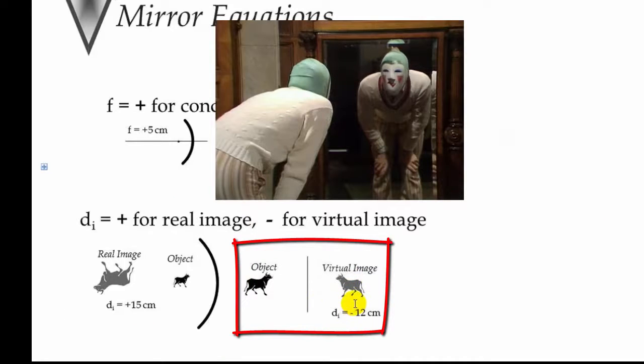But a virtual image, it comes out negative. So you're behind the mirror. The light actually diverges and your brain puts it together behind the mirror. In the case of a flat mirror or a convex mirror, or for a concave mirror when you're inside the focal point.